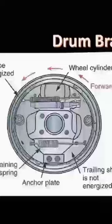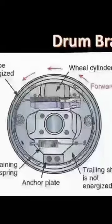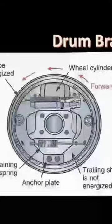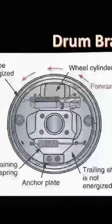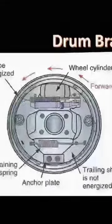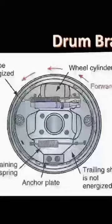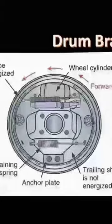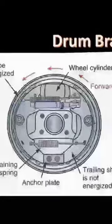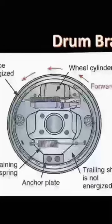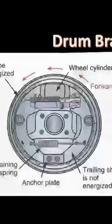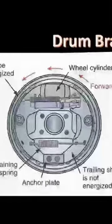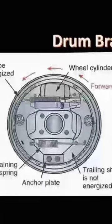Some servo action occurs when the leading shoe presses against the anchor pin at the bottom of the backing plate and applies some mechanical force to assist in its application. However, the trailing shoe is forced against the brake drum by movement from fluid pressure in the wheel cylinder alone.